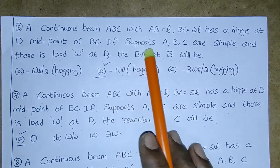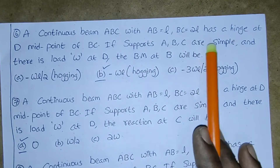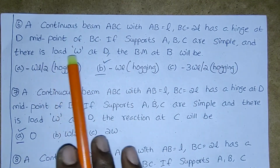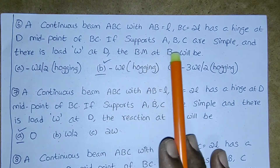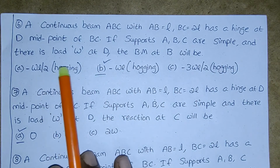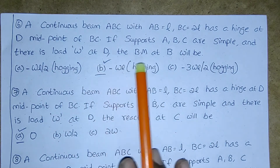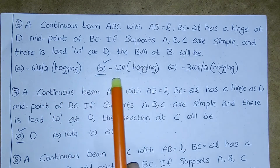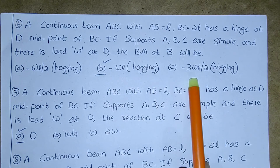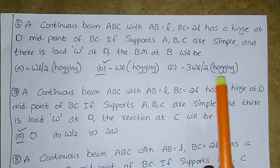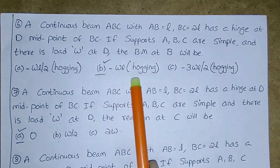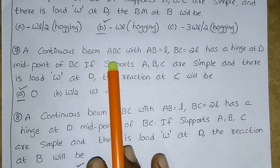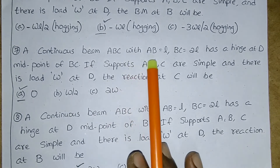Next: continuous beam ABC with AB = L and BC = 2L has a hinge at D, the midpoint of BC. Supports ABC are simple and there is a load w at D. The bending moment at B will be: -wL/2 hogging, -wL hogging, or -3wL/2 hogging. The correct answer is (b) -wL hogging.